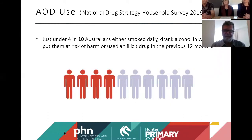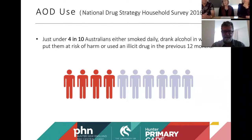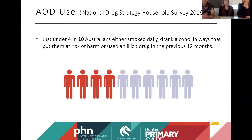Talking about prevalence first, just to set the scene: drug and alcohol use is incredibly common and in the GP setting it's something you'll be seeing every day. In 4 out of 10 Australians, they've either smoked daily, drunk alcohol at a risky level, or used illicit drugs in the previous 12 months. So almost half of Australians in the previous 12 months have done something that might be placing them in harm's way with regards to drug and alcohol.